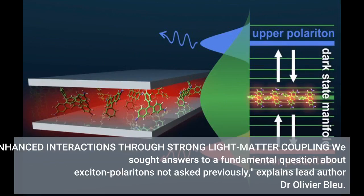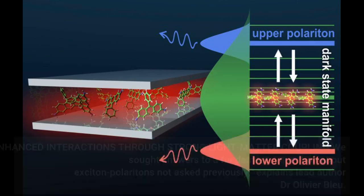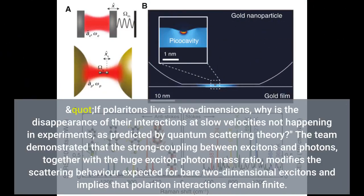Enhanced interactions through strong light-matter coupling. We sought answers to a fundamental question about exciton-polaritons not asked previously, explains lead author Dr. Olivier Bleu. If polaritons live in two dimensions, why is the disappearance of their interactions at slow velocities not happening in experiments, as predicted by quantum scattering theory?